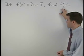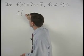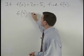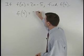Well, if we put a 4 into the function, that's f of 4, we get a 2 times 4 minus 5 out.